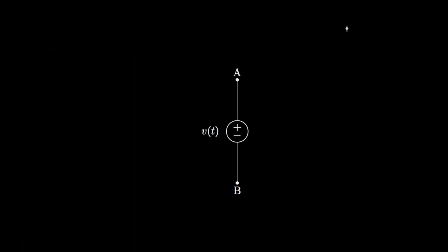A simple voltage source in an electric circuit is an element that provides a predetermined voltage drop across its terminals. The symbol for a voltage source looks like this, where the voltage across the terminals is equal to V of T, and it has a specified positive-negative polarity shown within the symbol. An example of a common voltage source would be a simple battery, which might provide V of T equal to 1.5 volts, 6 volts, 9 volts, 12 volts, or some other predetermined voltage across its terminals.